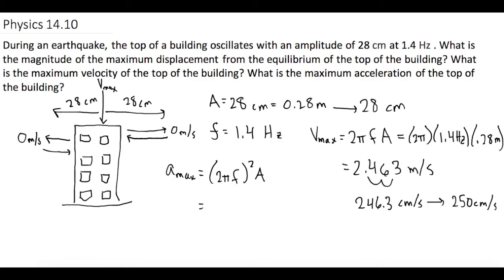So now if we plug in our numbers we have 2π times our frequency which was 1.4 Hertz, and all that gets squared, times our amplitude of 0.28 meters.